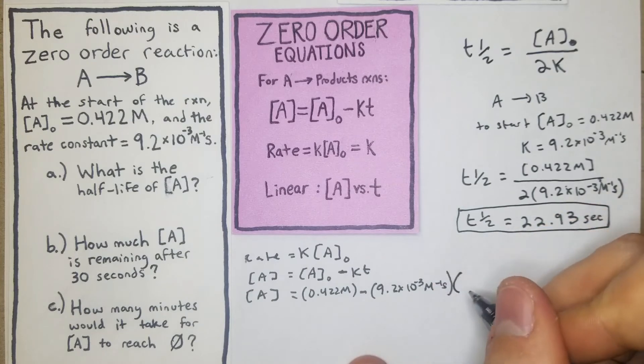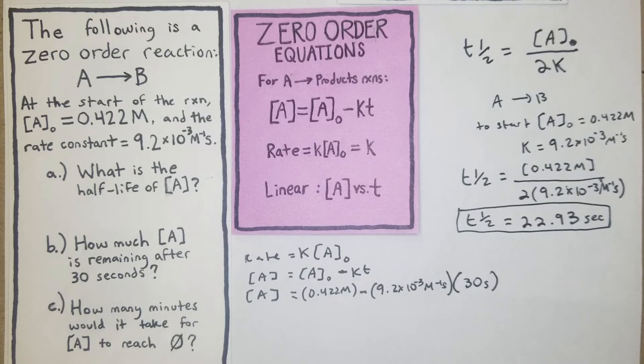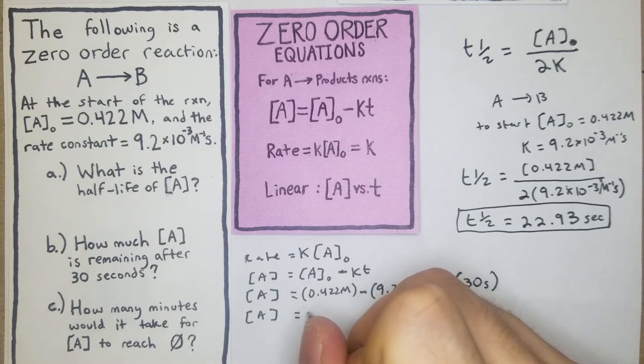[A] is equal to 0.422 M minus our K which was 9.2 × 10⁻³ M⁻¹s⁻¹, and then from there we're just going to do times our 30 seconds for our time. So now I'll just do that up here.